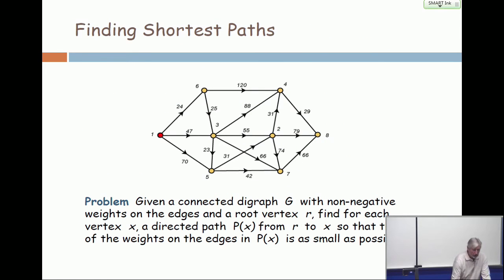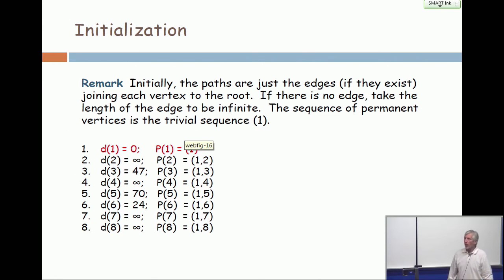And again, I back up. And you see the three edges incident with the root? And their weights are 24, 47, and 70. So when I initialize the algorithm, the only weights which are finite are those ones which represent edges incident with the root.